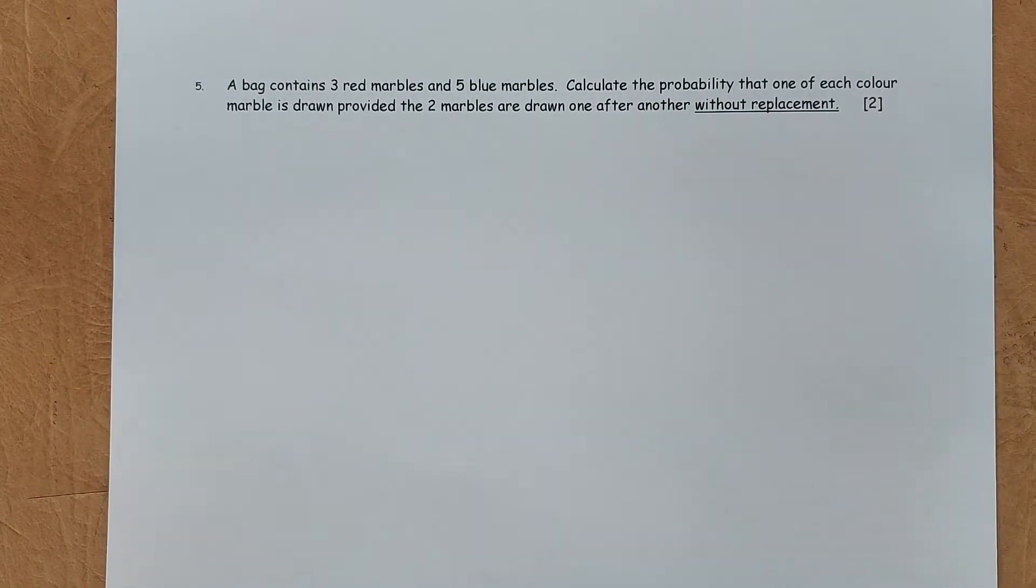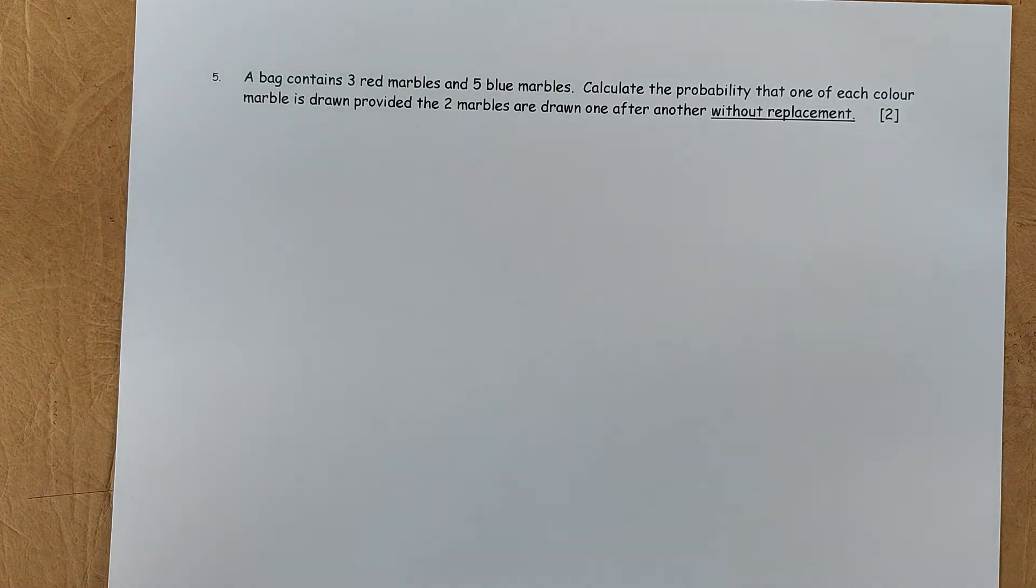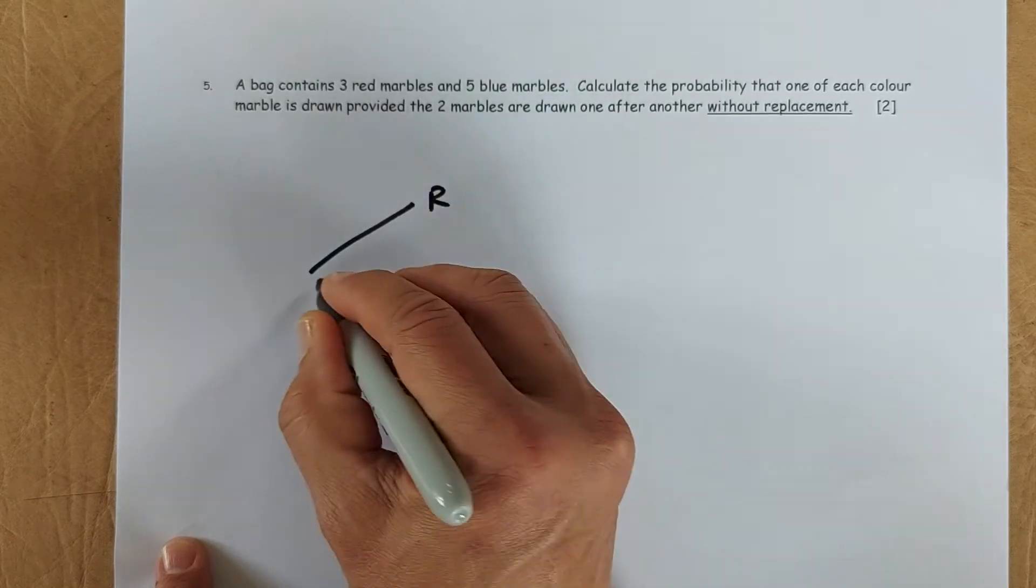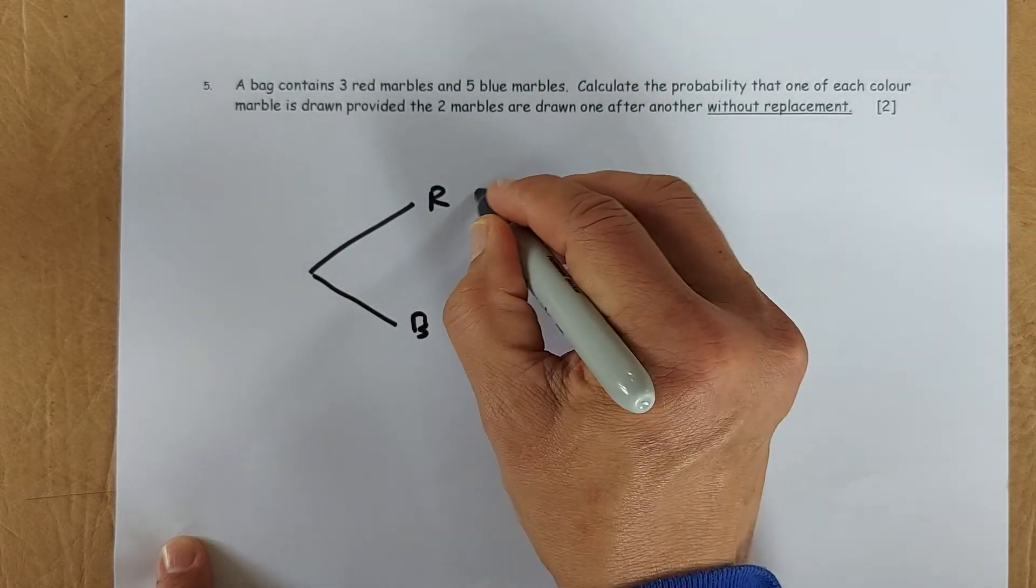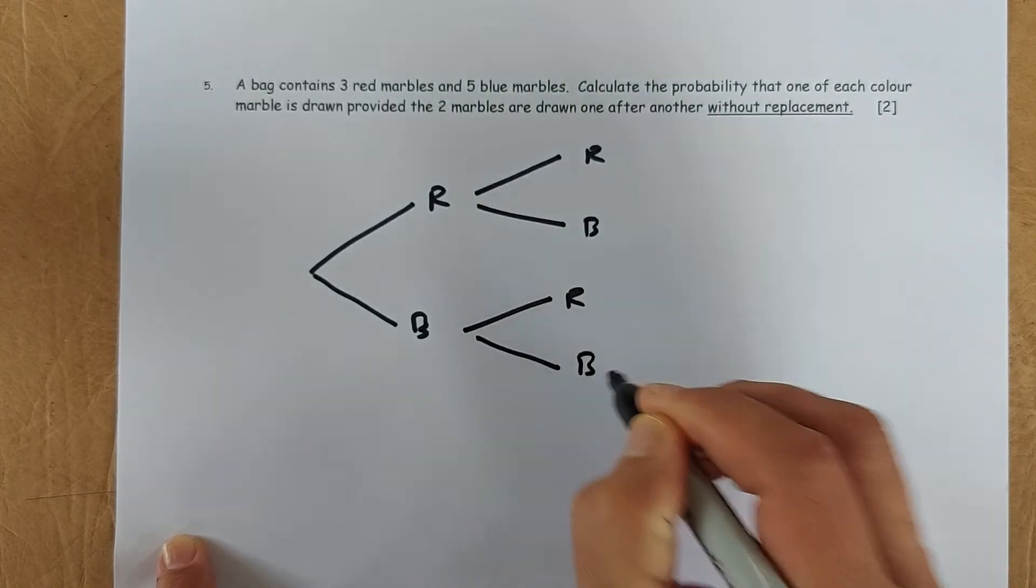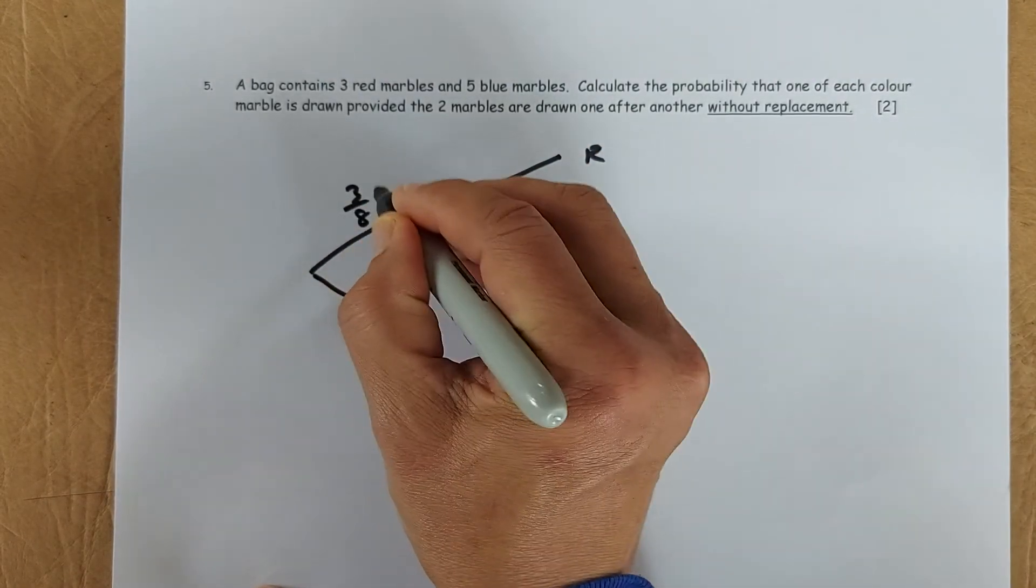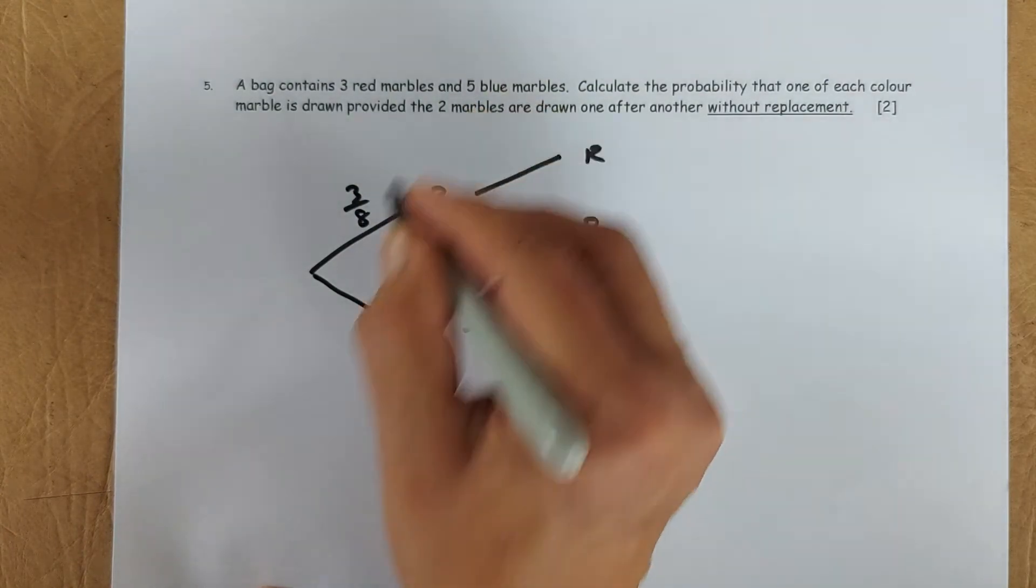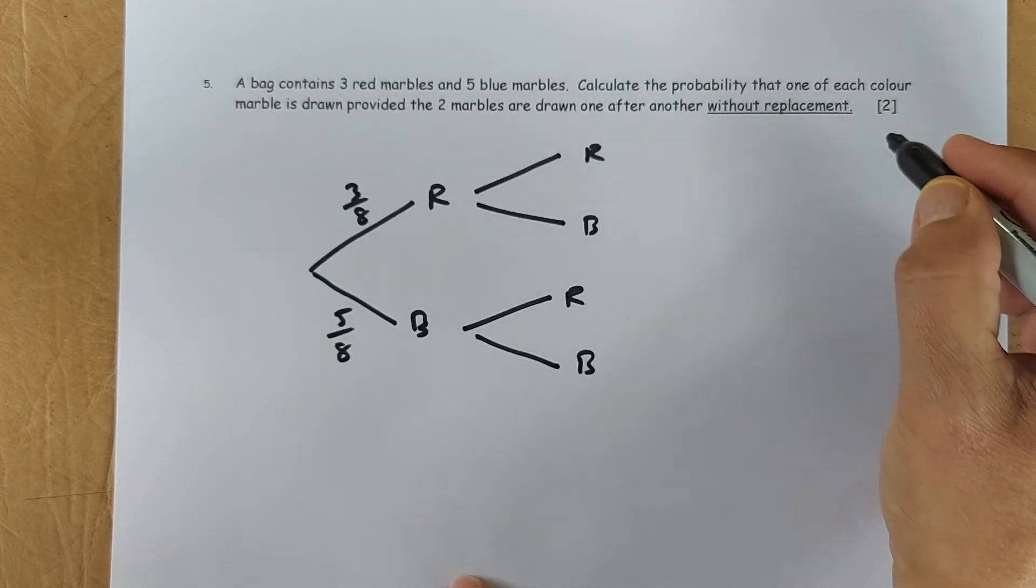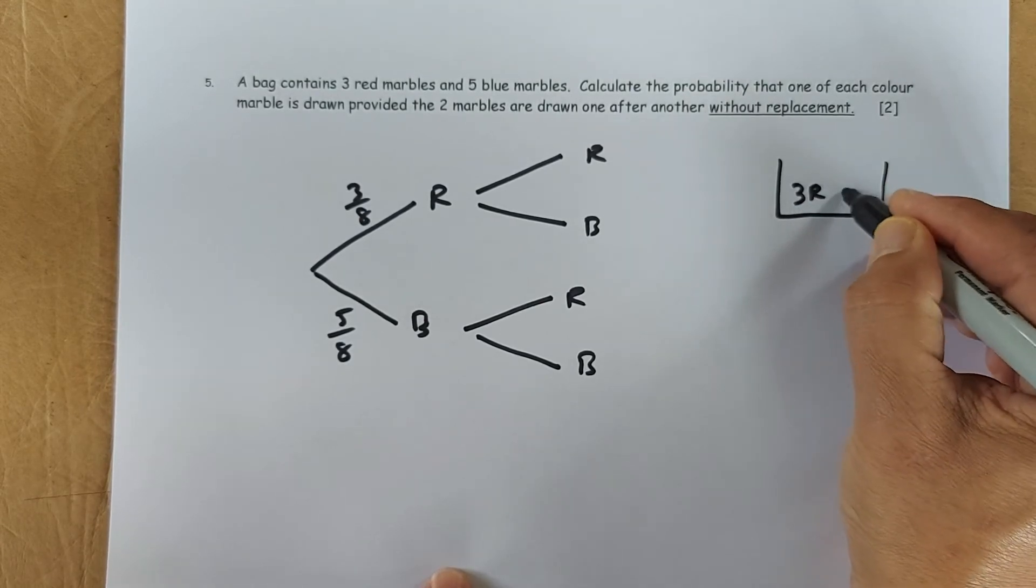Now the last question is the probability tree again. As I said, probability tree is very important. So a bag contains red marbles and blue marbles. The first bag is going to be red or blue. So the second is going to be red or blue, and red or blue again. So the first ball, when you draw the chances, the red ball is going to be 3 over 8, because there are 8 marbles altogether. The red is 3, the blue is going to be 5 over 8. So now, if this is without replacement, you take it out, you don't put it back. So initially it was 3 red and 5 blue.